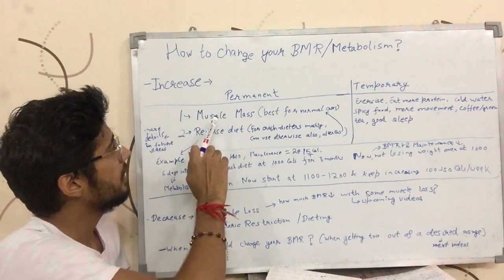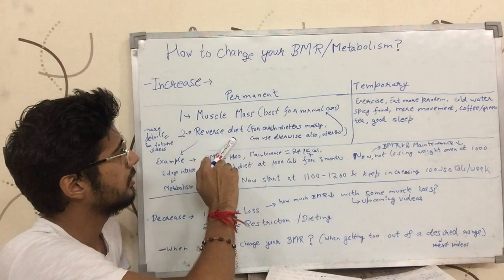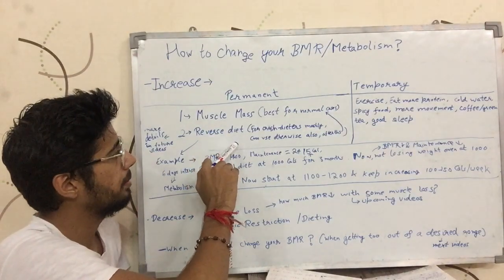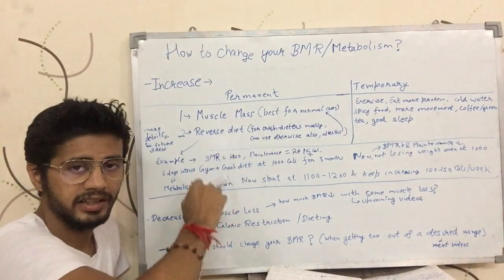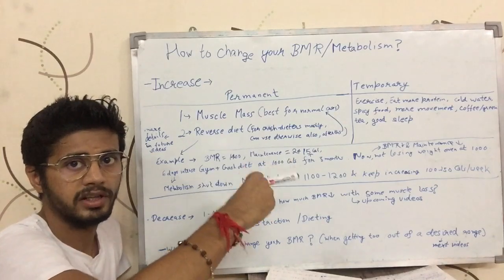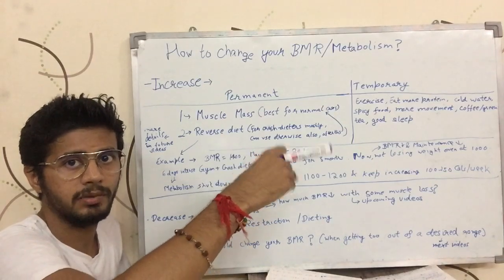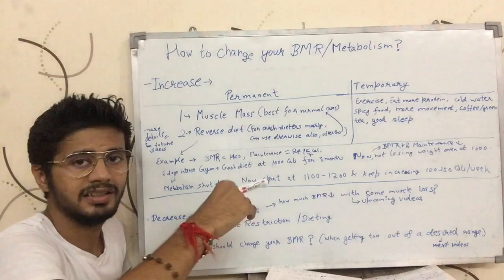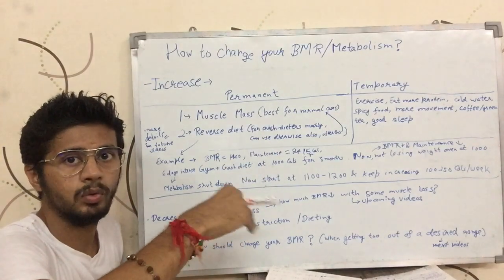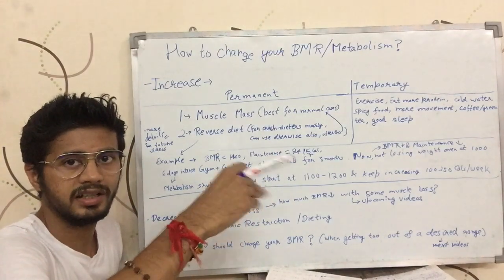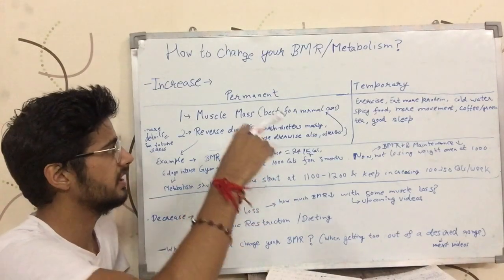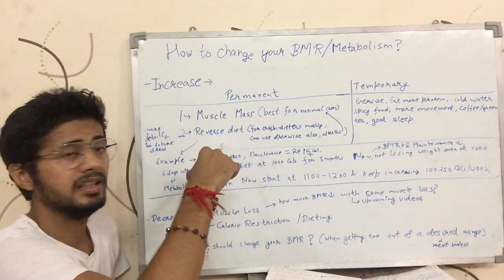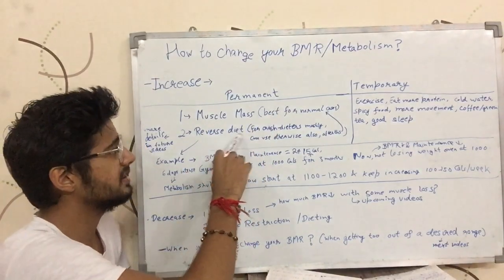If your BMR is less, or your metabolism is less, we call it reverse diet. You need to increase your calories gradually. As you increase your caloric intake, the body adapts and increases your maintenance. If you have a low BMR, you can increase it through reverse diet.